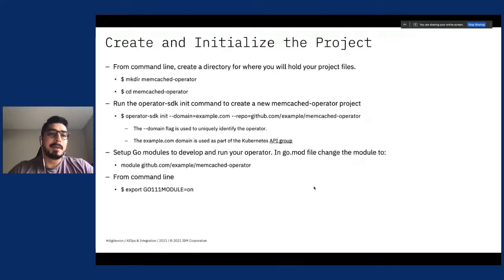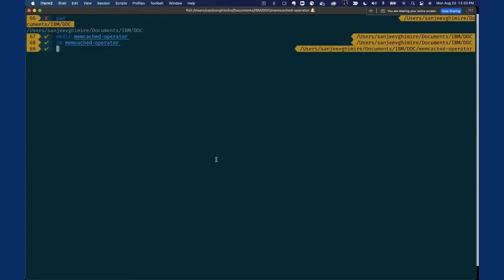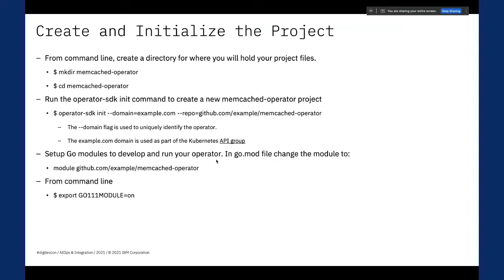Let's create a directory called memcached-operator and initialize our project there. To initialize, we run the operator-sdk init command and provide our domain and repo as parameters. The domain flag is basically the unique identifier for the operator. We also need to properly set our Go modules in the go.mod file and activate Go module support by running the export command for Go modules. This will take a couple of minutes to finish.